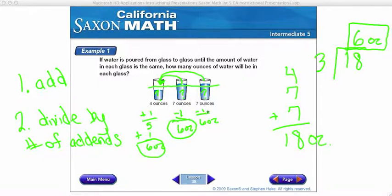And now I have six ounces in cup one, six ounces in cup two, and six ounces in cup three. So the simple way is to add and then divide.